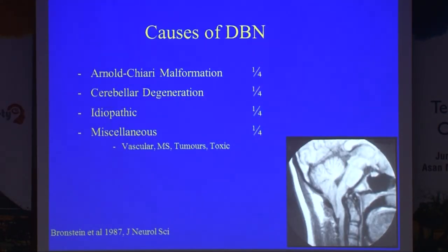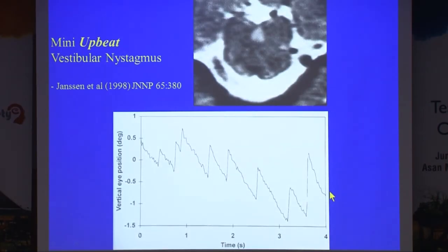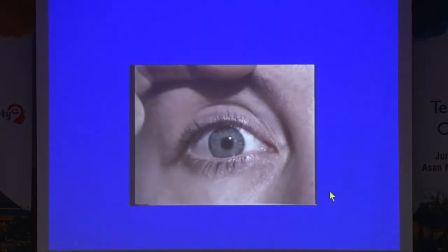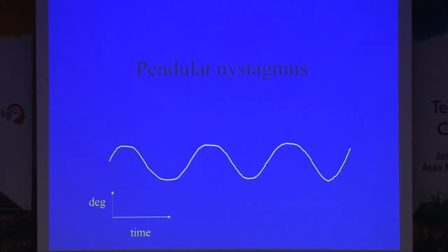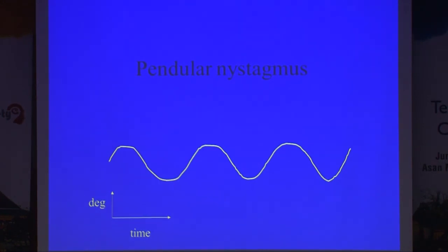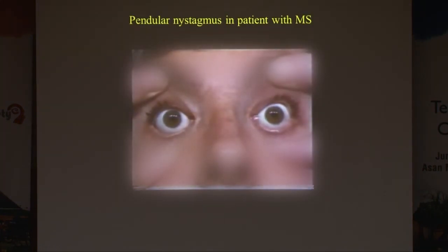Causes of downbeat nystagmus — always the same suspects, including Arnold Chiari malformation with cerebellar ectopia. Sometimes the nystagmus is very small; it can be torsional. Pendular nystagmus: if you ask a patient with pendular nystagmus, they will tell you with one hand how they see the world oscillating — because the eyes are doing that movement.